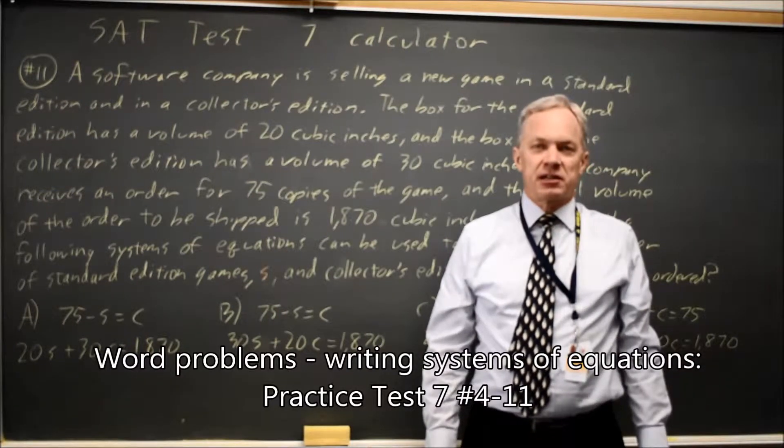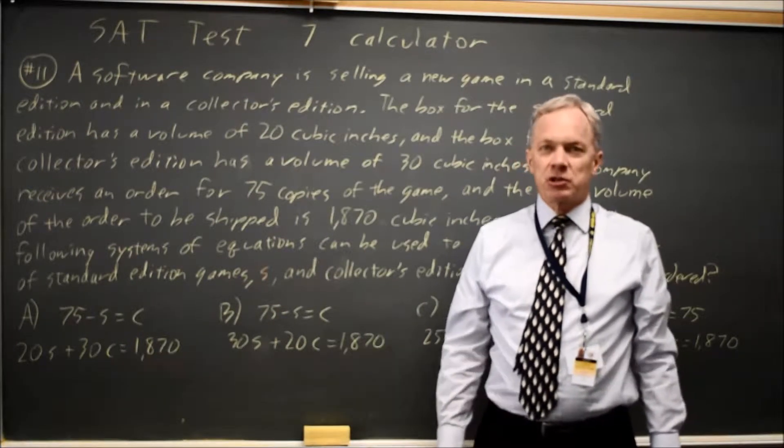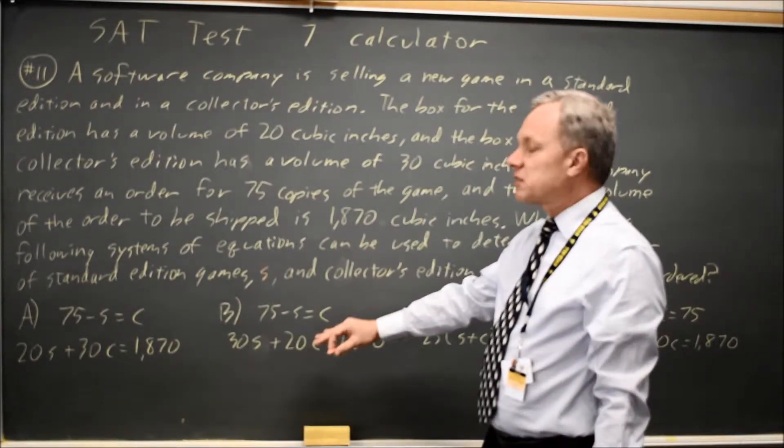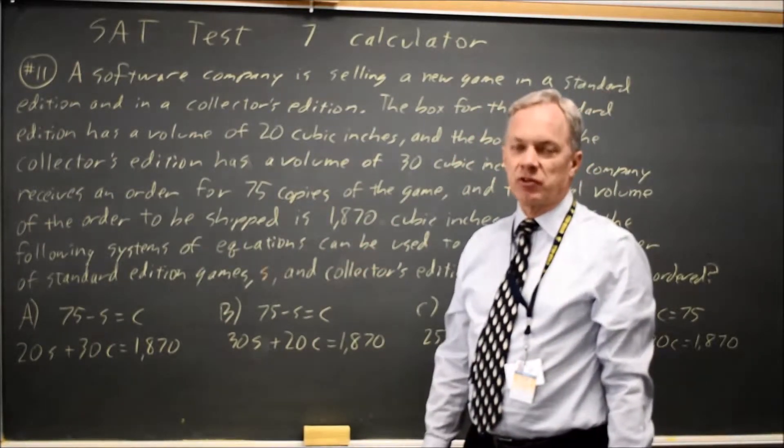This is SAT test 7, calculator question number 11. College Board gives us a word problem and asks us to identify the system of equations that could be used to solve the word problem.